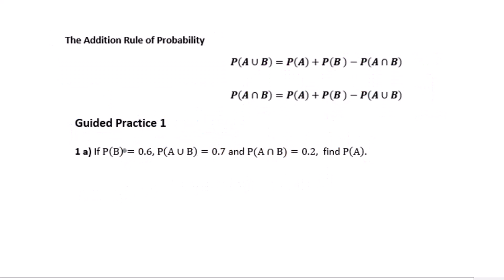Let's go to guided practice 1a. If P(B) equals 0.6, P(A∪B) equals 0.7, and P(A∩B) equals 0.2, find P(A). We will use the addition rule of probability and do the substitution.